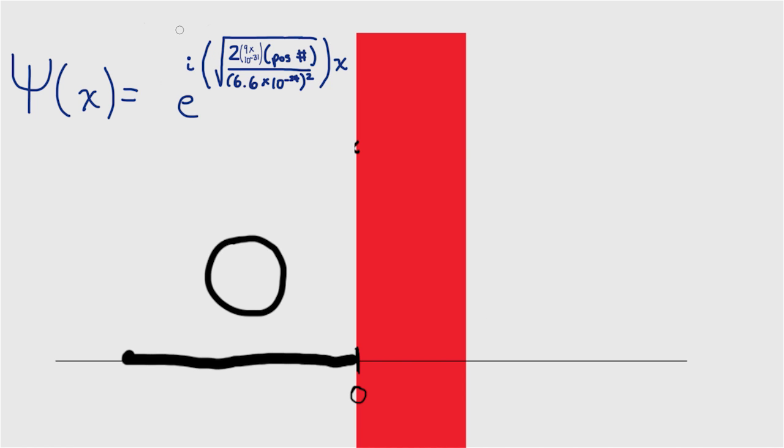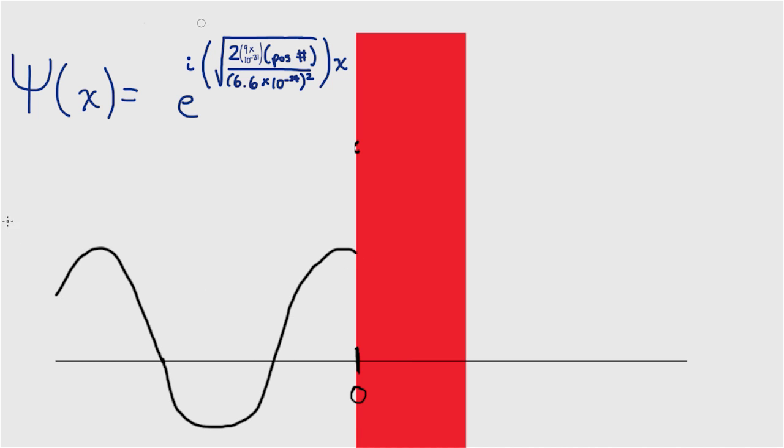You might be thinking to yourself, what would this function look like on a graph? It turns out the function resembles a wave, sort of like a sine curve. But hang on, since the function dips into negative values, does that mean that there's a negative probability of the particle existing at certain x values?